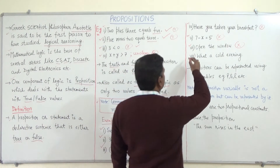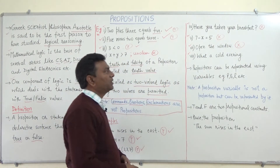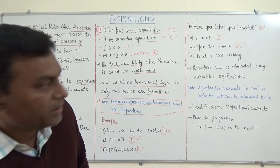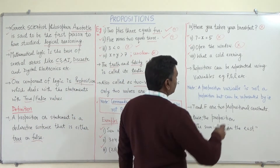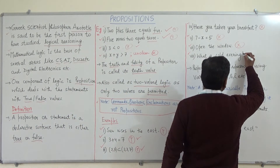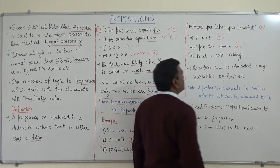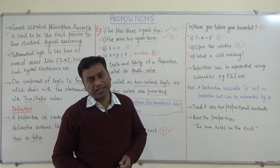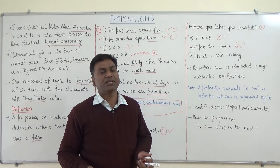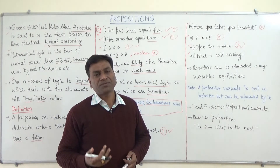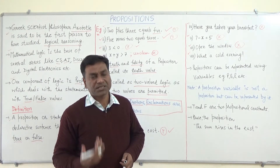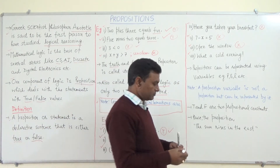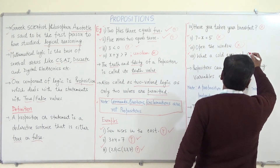The eighth example is 'What a cold evening!' — this is an exclamation. Sentences like 'What a cold evening,' 'What a sunny day,' 'What a beautiful morning,' and 'Hurrah, we have won the match' all include an exclamation sign. So these are also not propositions.